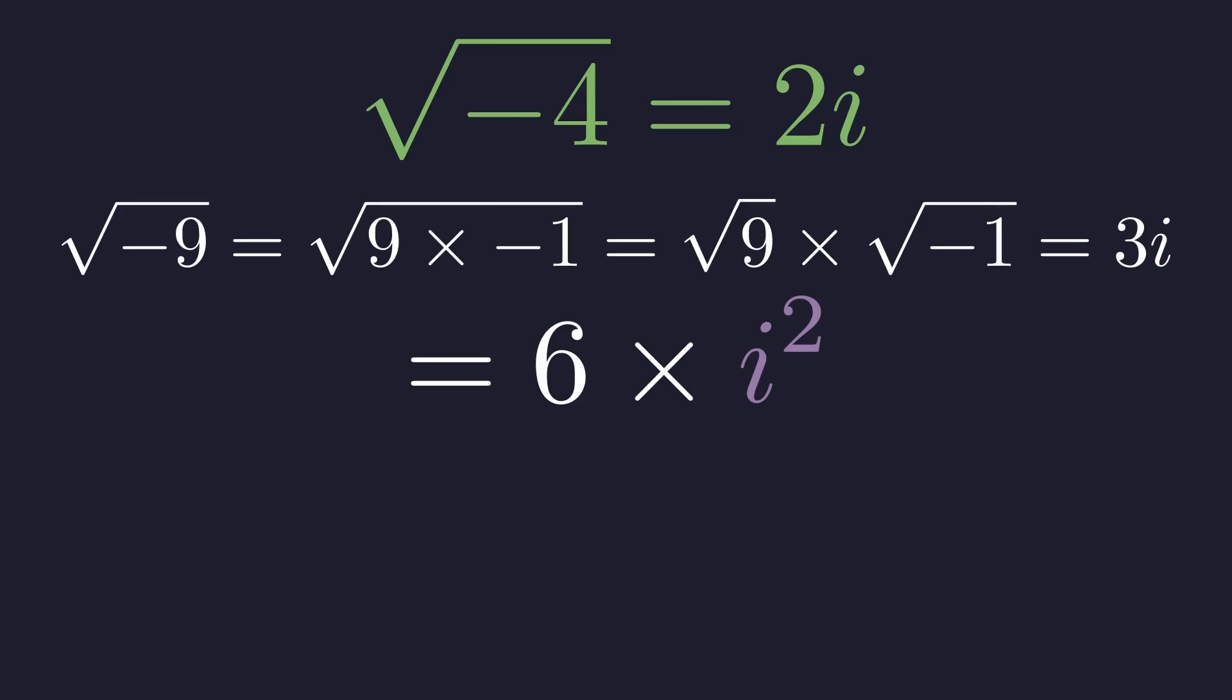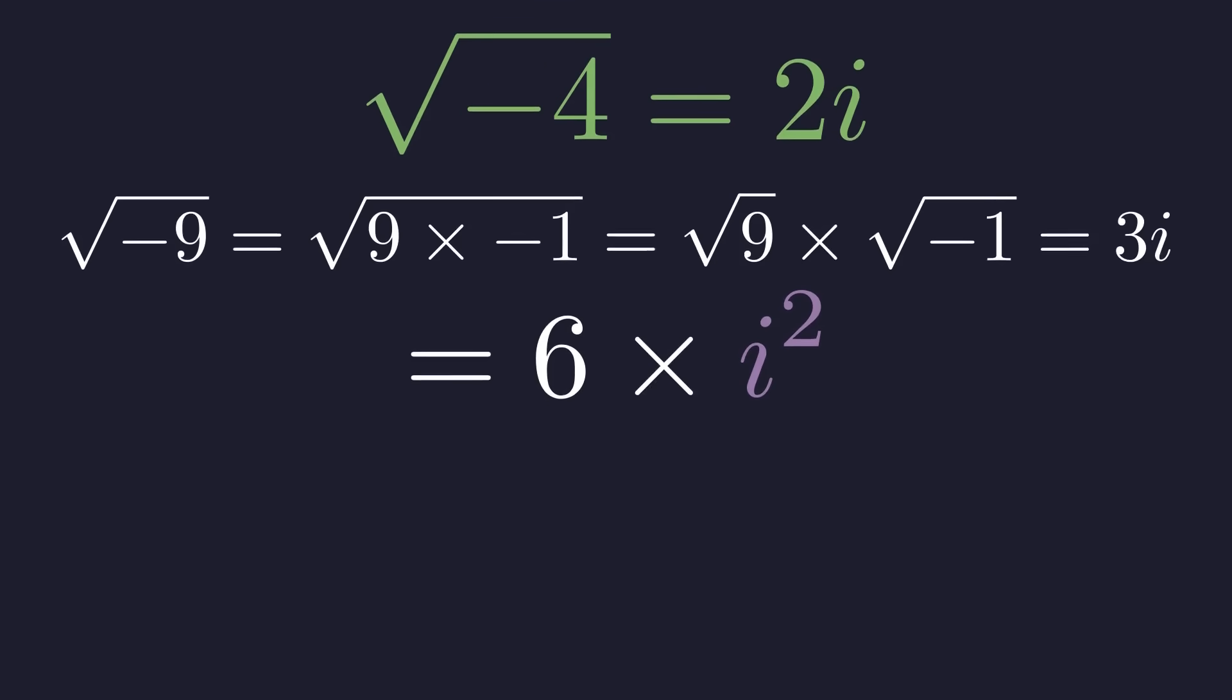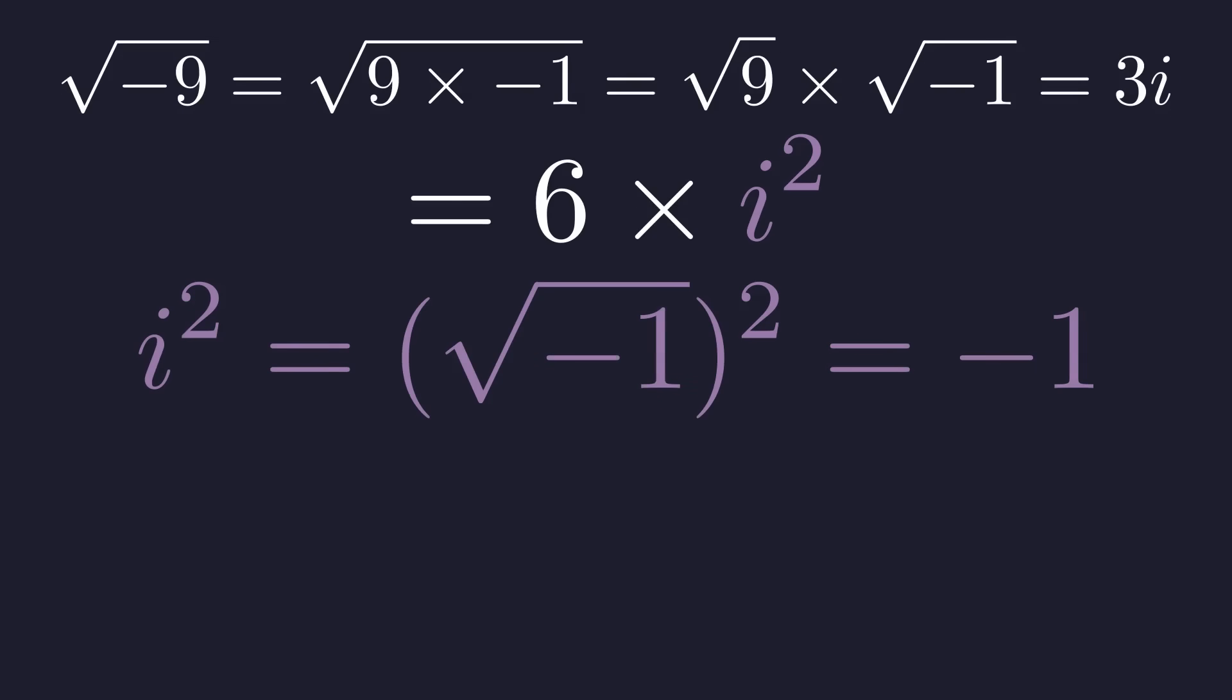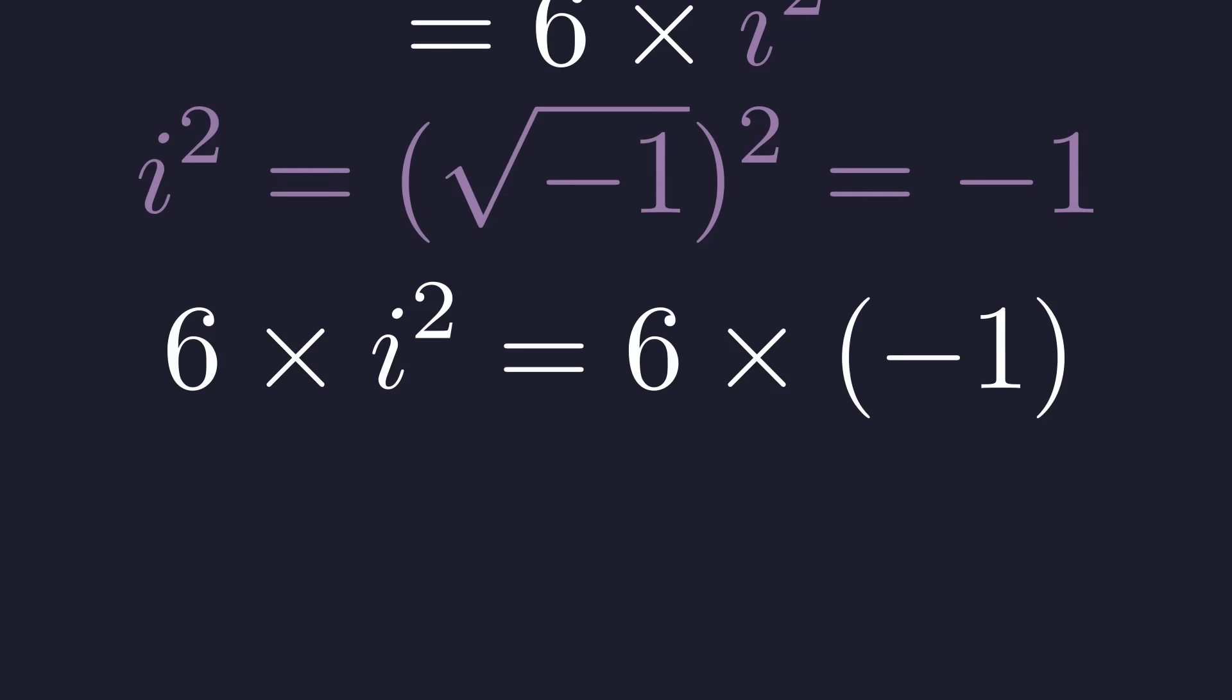What is i squared? From the definition of i, we know that if i is the square root of negative 1, then i squared must be negative 1. This is a fundamental identity in complex numbers. So, we substitute negative 1 for i squared in our expression. And we arrive at our final correct answer, negative 6.